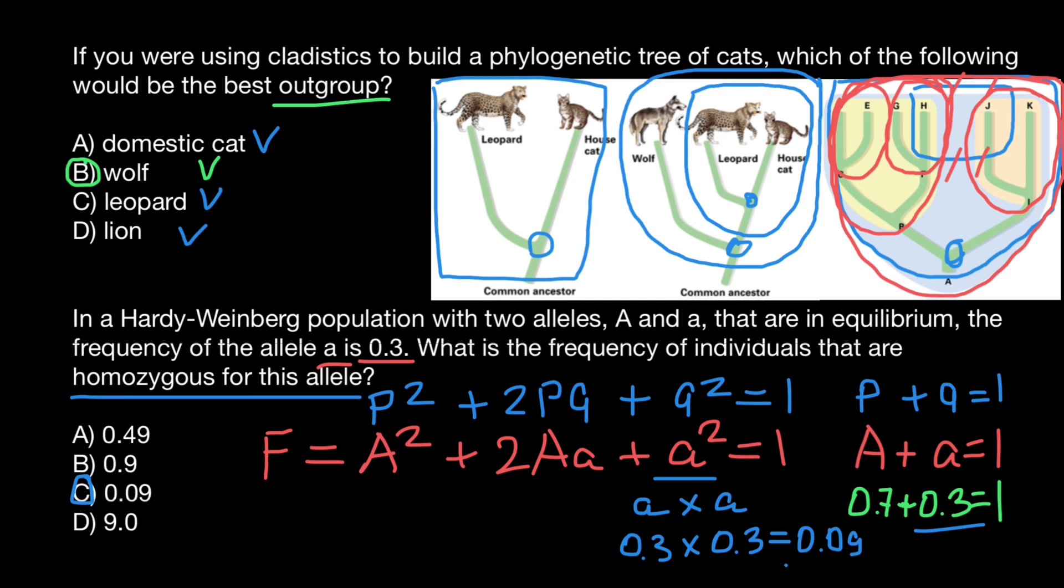Again, what we got, this is frequency of this genotype, which is homozygous recessive, and genotype is small a small a. And this is all for today. Subscribe and see you in the next video. Goodbye.